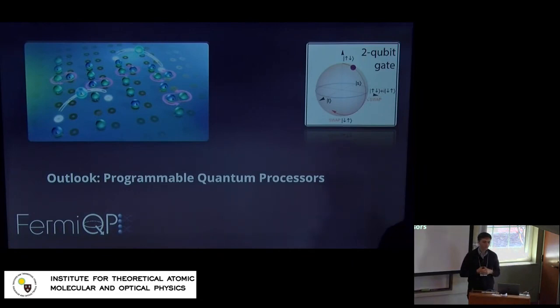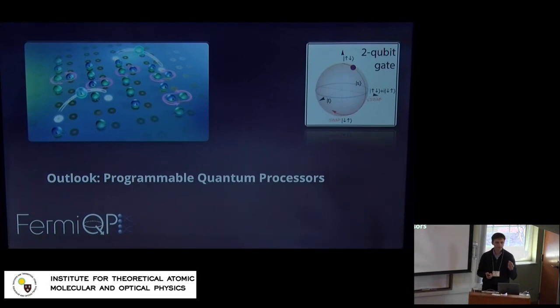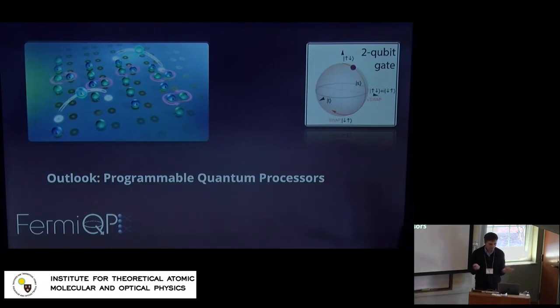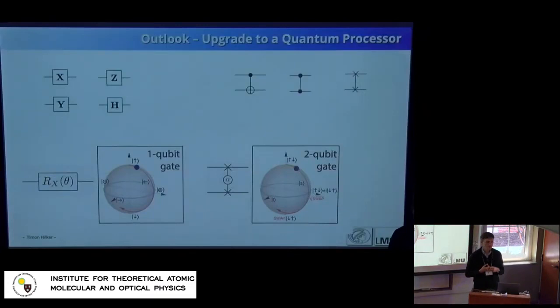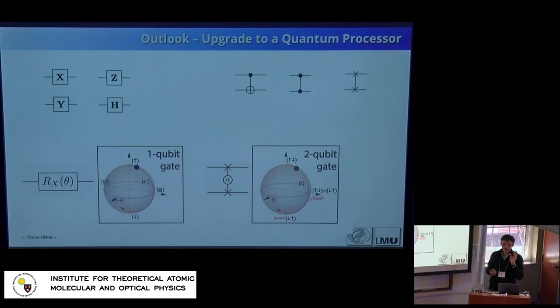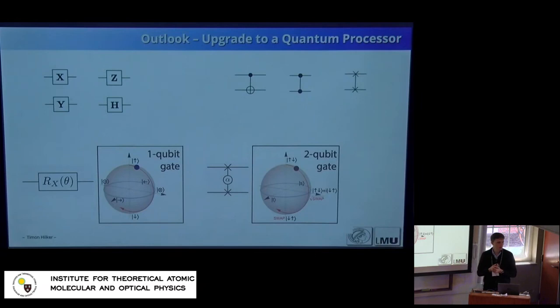Let me briefly cover our future outlook. With the huge wave of quantum computing in recent years, one can ask whether something can be learned from these lattice simulators and integrated with quantum computing approaches. Most ingredients already exist. The idea is to do things in a gate-like fashion — instead of continuous Hamiltonian time evolution, do local time gates between particles to change the quantum state. One-qubit gates would be spin rotations; two-qubit gates can generate entanglement between two particles.